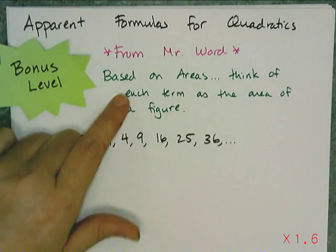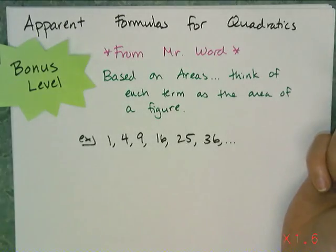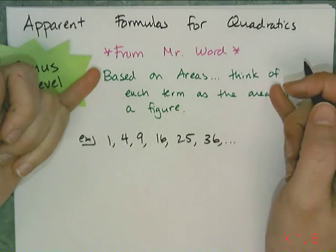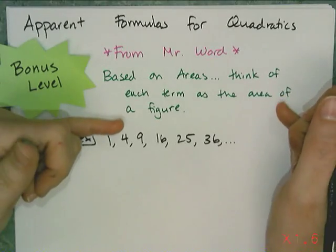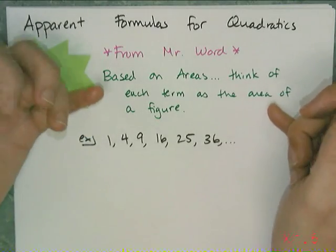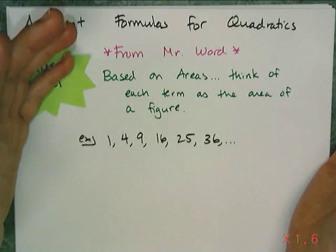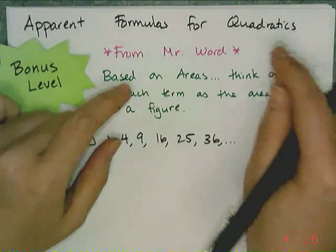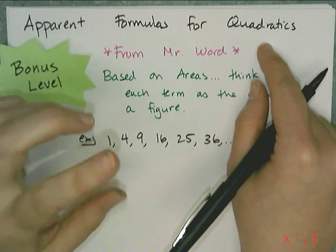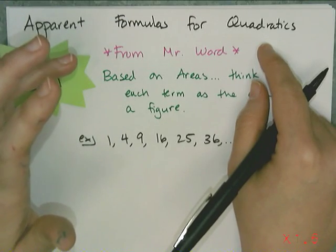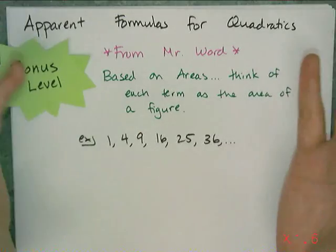This method I'm about to show you is from Mr. Word, our geometry teacher, and it is based on areas. The concept is that you have to think of each term as the area of a figure — normally either a square or rectangle, and for the trickier ones, a triangle. Now this method doesn't work for every single quadratic; it'll only work on the ones that can easily be derived from the area of one of those shapes.